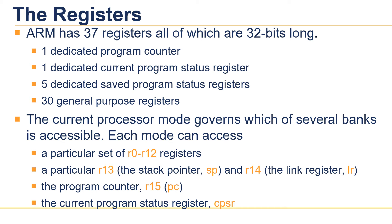In a privileged mode, a particular SPSR, the saved program status register, stores a copy of the previous CPSR value when an exception occurs. This SPSR is combined with the link register, which allows exceptions to return without corrupting the processor state, to resume the process.